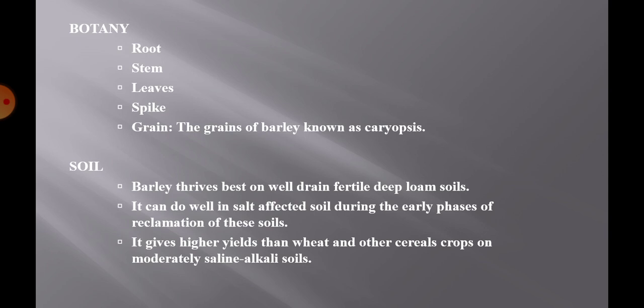Spike: The last flag leaf generally contains the ear within its sheath, which swells and is called the boot. The spike is located at the apex of the stem. The grain of barley is also known as caryopsis. Barley thrives best on well-drained, fertile, deep loam soils. It can do well in salt-affected soil during early phases of reclamation and gives higher yield than wheat and other cereal crops on moderately saline alkali soils.